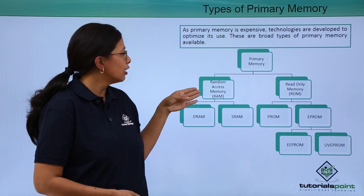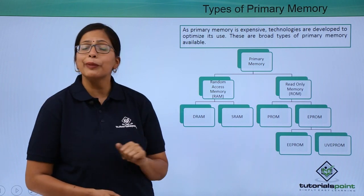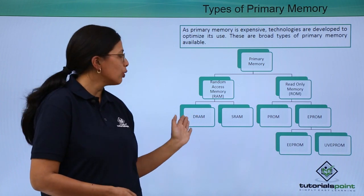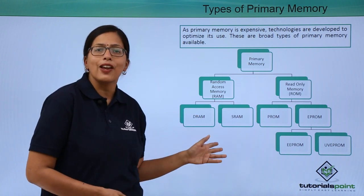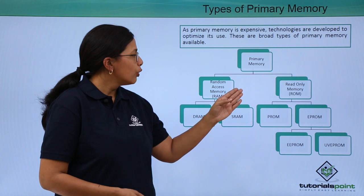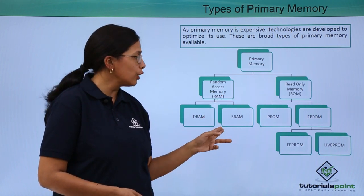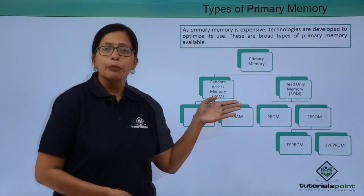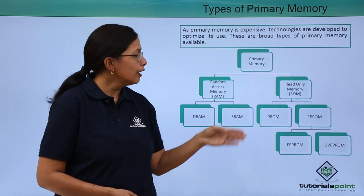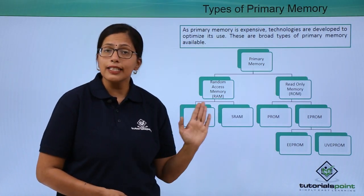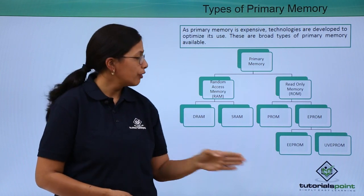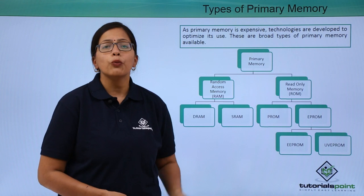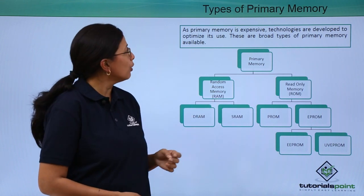As you can see here, random access memory which is the RAM, and the read only memory which is the ROM. RAM is again of two types: DRAM which is the dynamic RAM and SRAM which is the static RAM. ROM is again of two types: PROM and EPROM. PROM is programmable ROM and EPROM is erasable programmable ROM, which is again of two types: EEPROM and UVEPROM. We will look at these in detail just now.